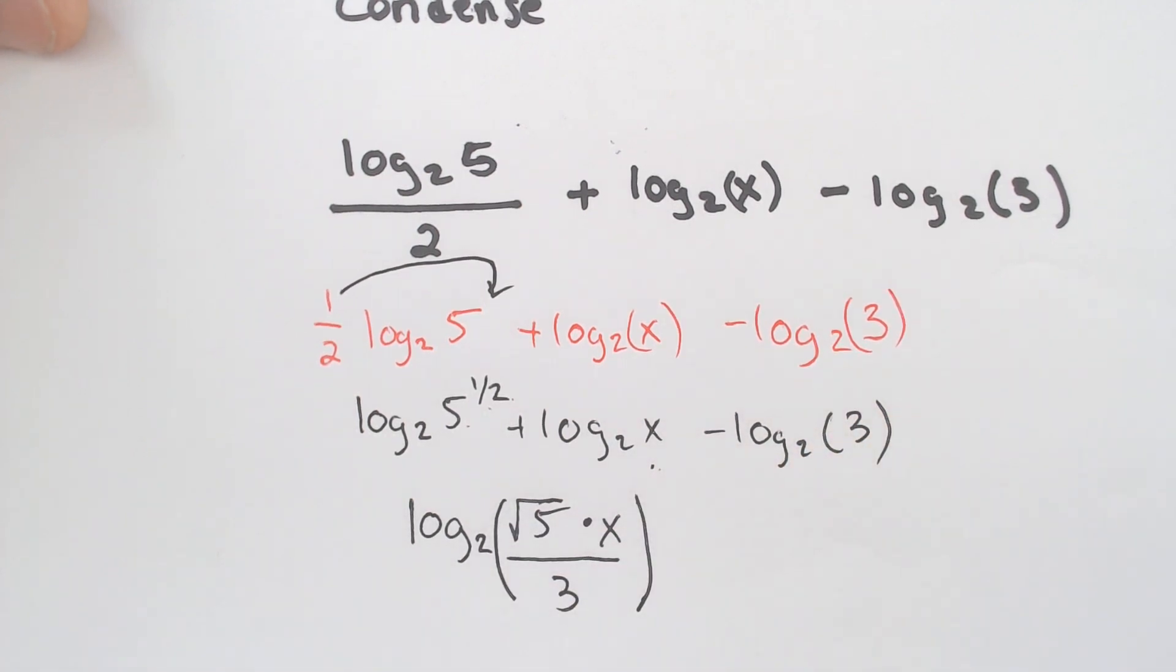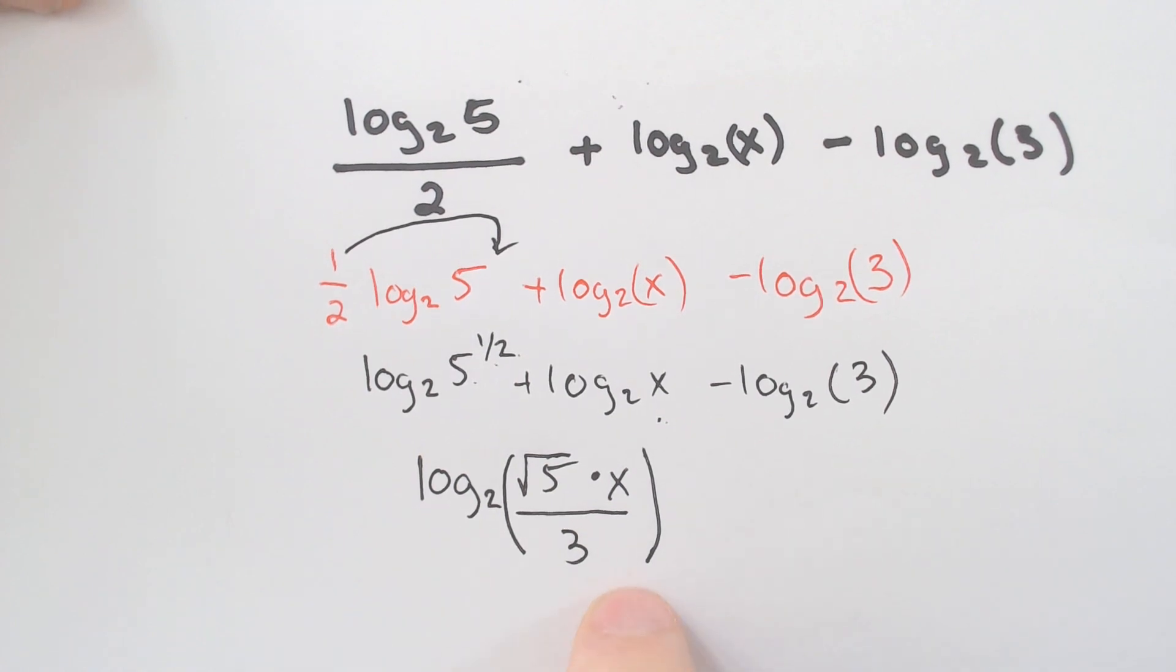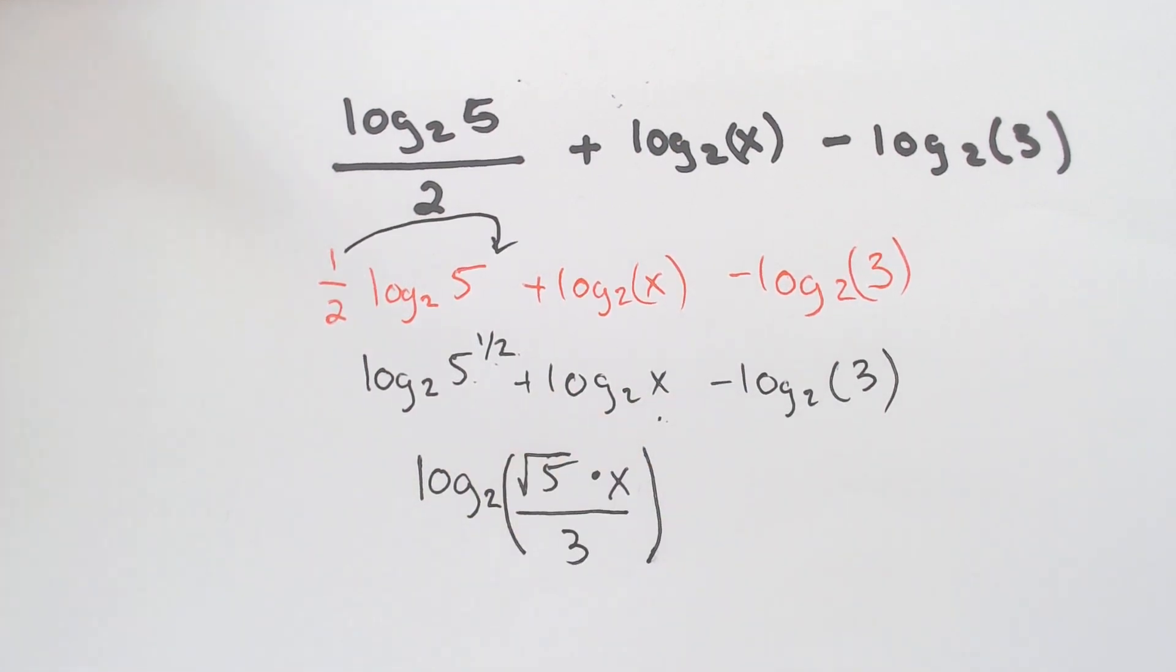And then minus the 3 means that we have to just divide all this by 3. A lot of times you will see parentheses around here to know that this log 2 is of all of that, and know that we're not dividing everything by 3 like we were in the original. That it is the log 2 of all this stuff.